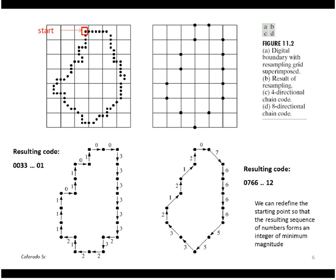We can make the representation invariant to our choice of starting point by considering a cyclical permutation of the chain code to find the sequence of minimum magnitude. In this example, this is the integer of minimum magnitude because it starts with a 0. Any other starting point would yield an integer of larger magnitude.